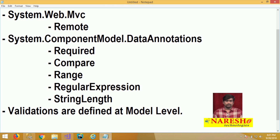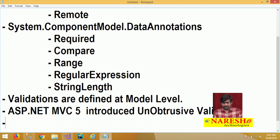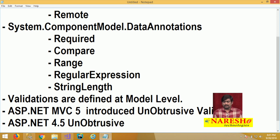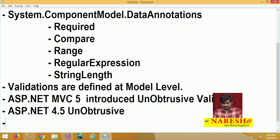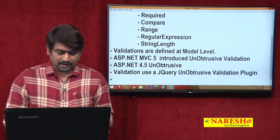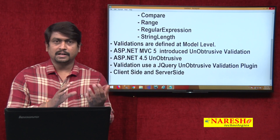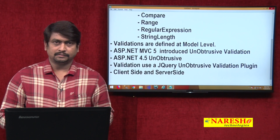A model will verify the values before they are sent into the database. Very importantly, ASP.NET MVC from version 5 has introduced unobtrusive validation. ASP.NET Framework 4.5 uses this unobtrusive mode. The validations used from ASP.NET MVC 5 use a jQuery unobtrusive validation plugin. This plugin makes the validations both client-side and server-side, enabling a jQuery plugin that handles validations on both sides. We are going to learn how to handle these validations both client-side and server-side.